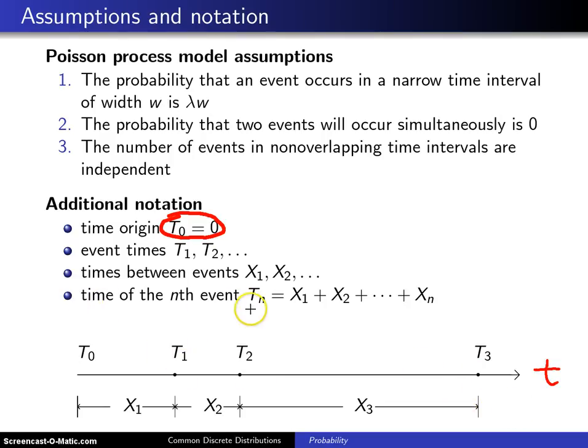The time of the nth event, therefore, is going to be X1 plus X2, all the way up to Xn. In other words, for example, T3 will be X1 plus X2 plus X3.